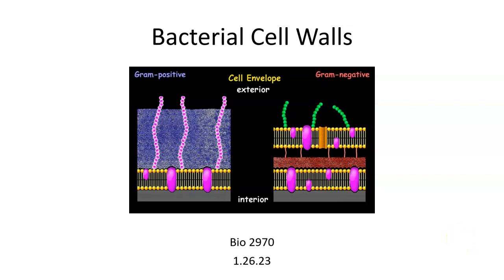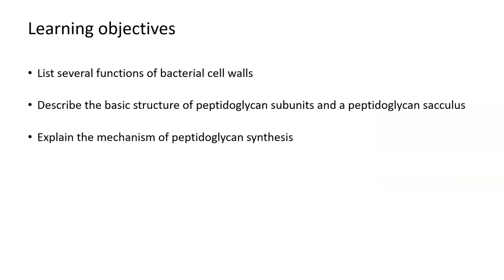In this lecture, we're going to be discussing bacterial cell walls. We're going to list off several functions of bacterial cell walls and what they do for the bacteria, and then we're going to talk about the molecular structure of peptidoglycan, which is the main component of cell walls of bacteria, and we're going to talk about how that peptidoglycan gets made or synthesized.